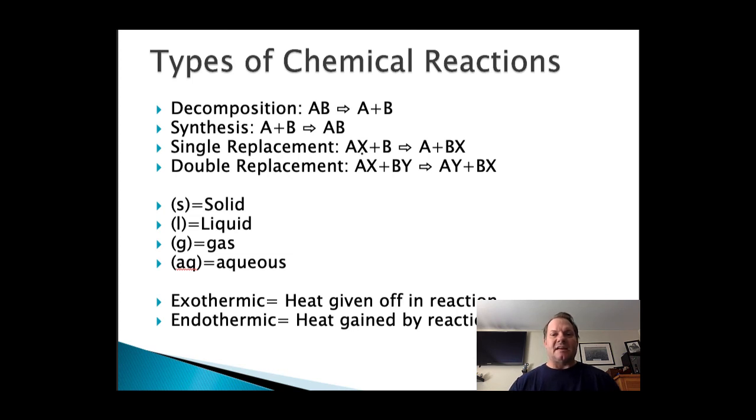Single replacement is when A is bonded to X, B is by itself. Then B steals X away and leaves A by itself, and B is now with X. Kind of reminds me of being in high school. I was like, A. As soon as I got a girlfriend, she'd take off and date B. I'd be all alone. Now, double replacement is more like the soap operas, where A is bonded to X, B is bonded to Y, and then at the end, A is bonded to Y and B is bonded to X. They've changed partners. So it's a double replacement when each starts with a partner. It's a single replacement when one of them is all by itself. Poor Mr. Lockery.